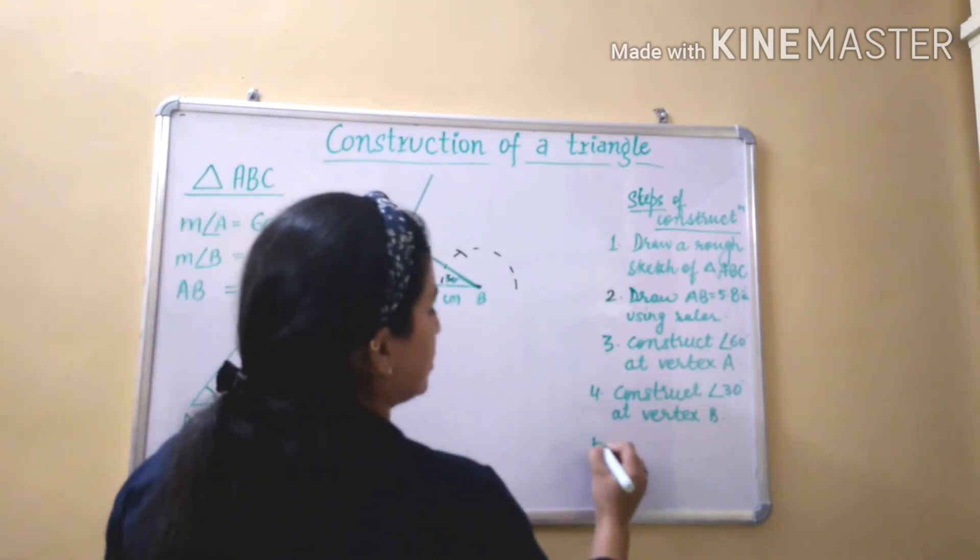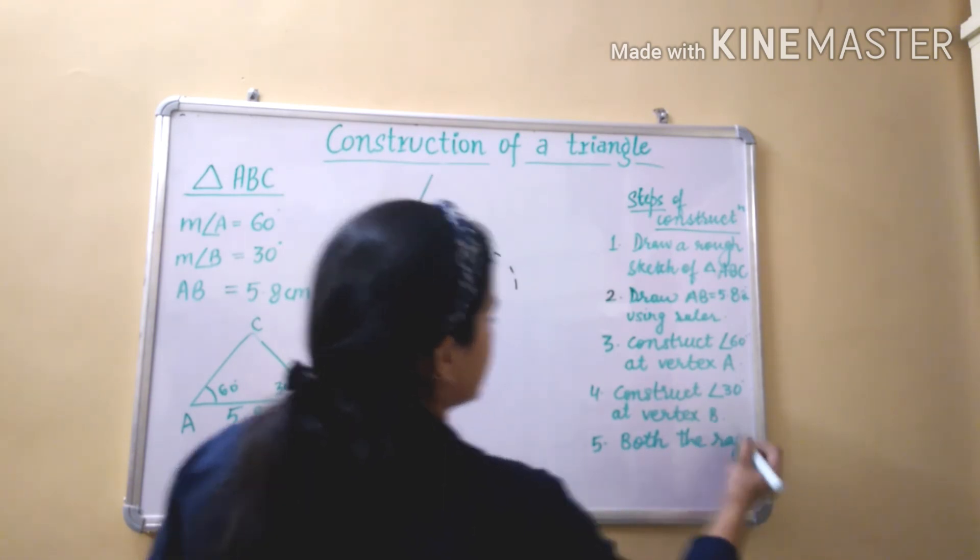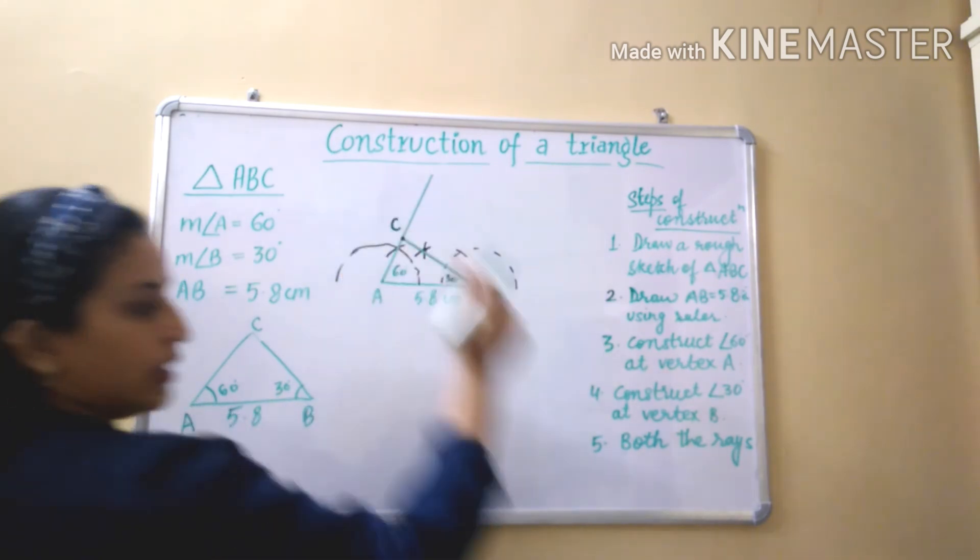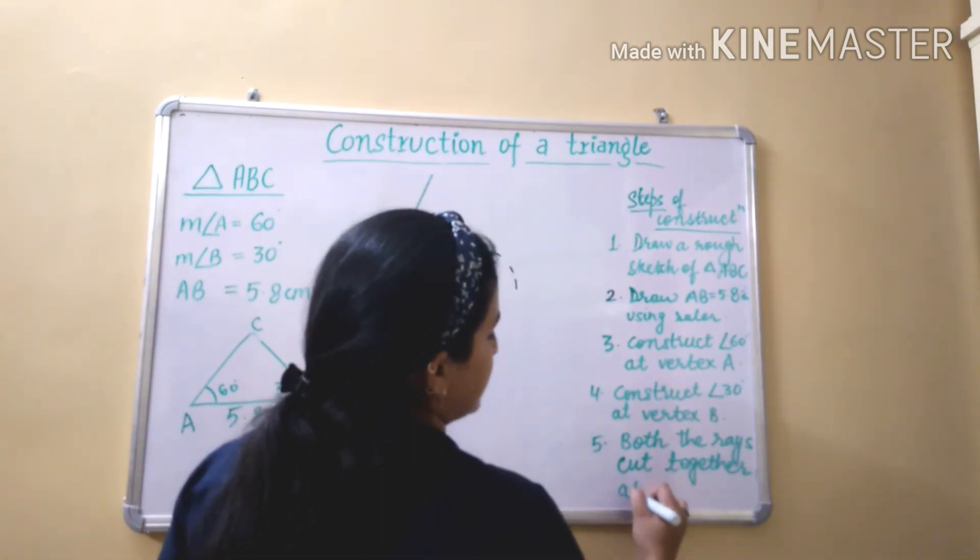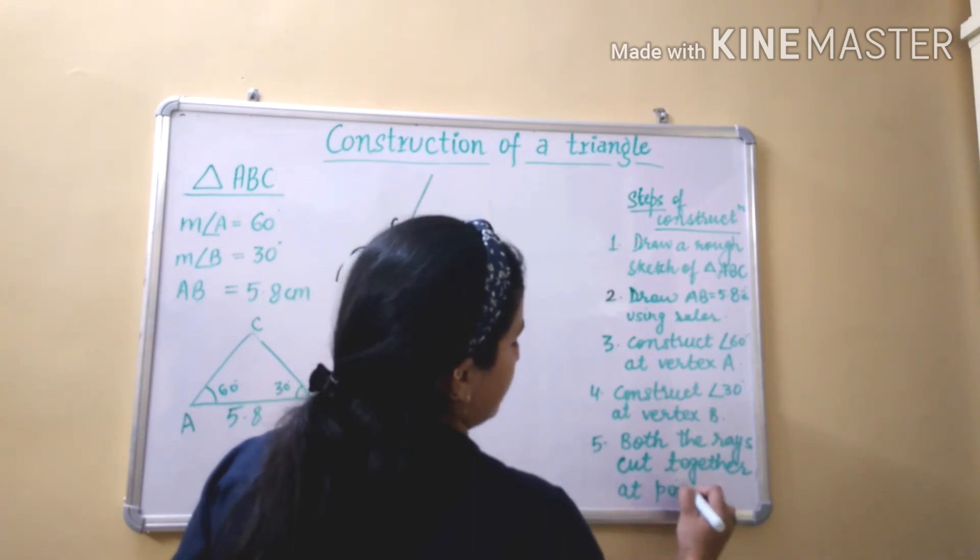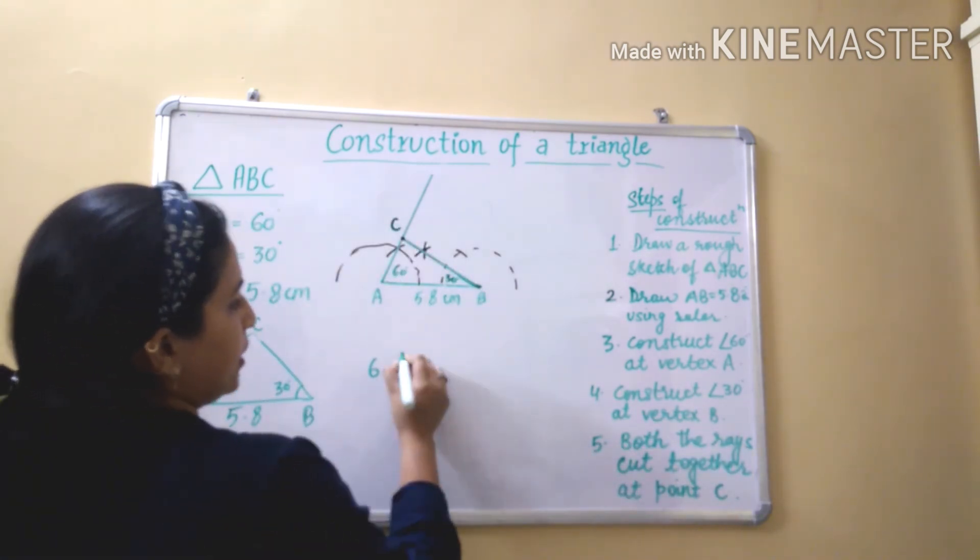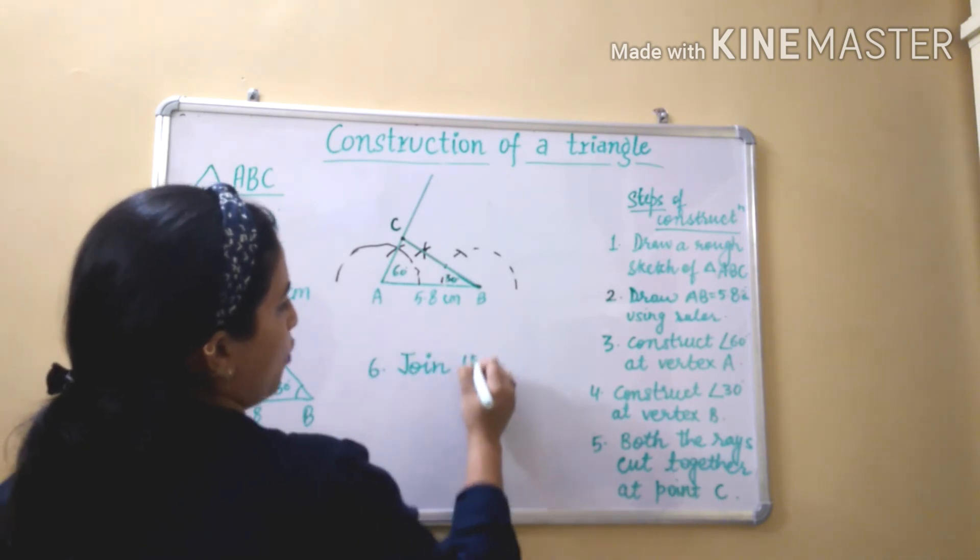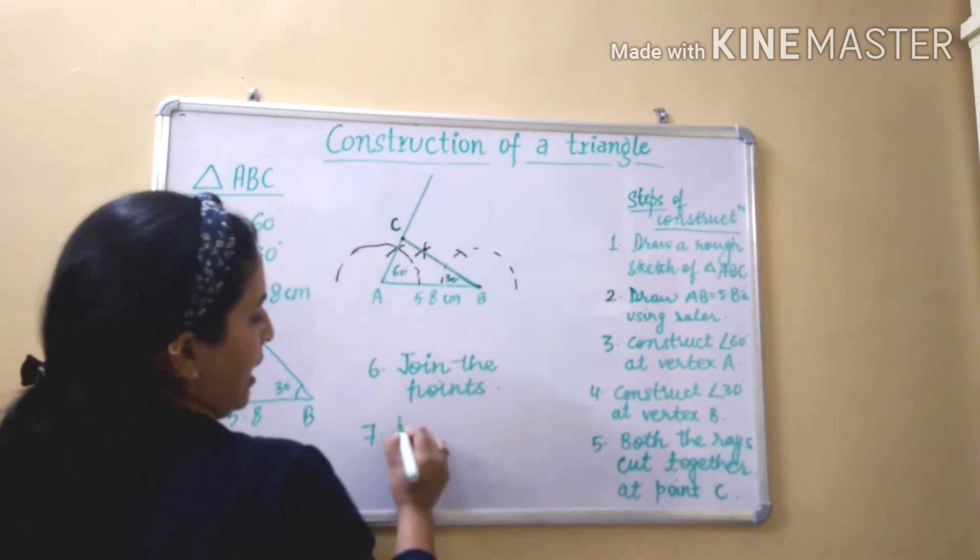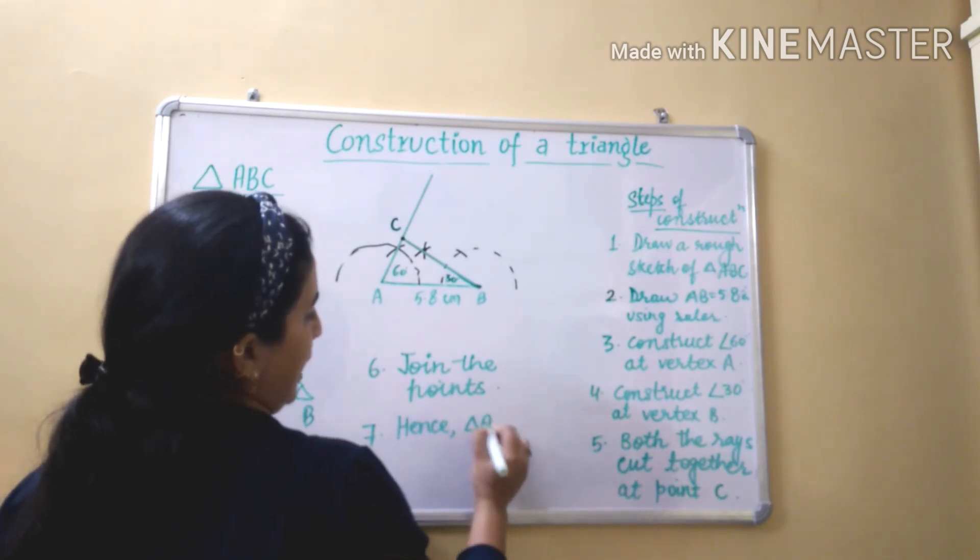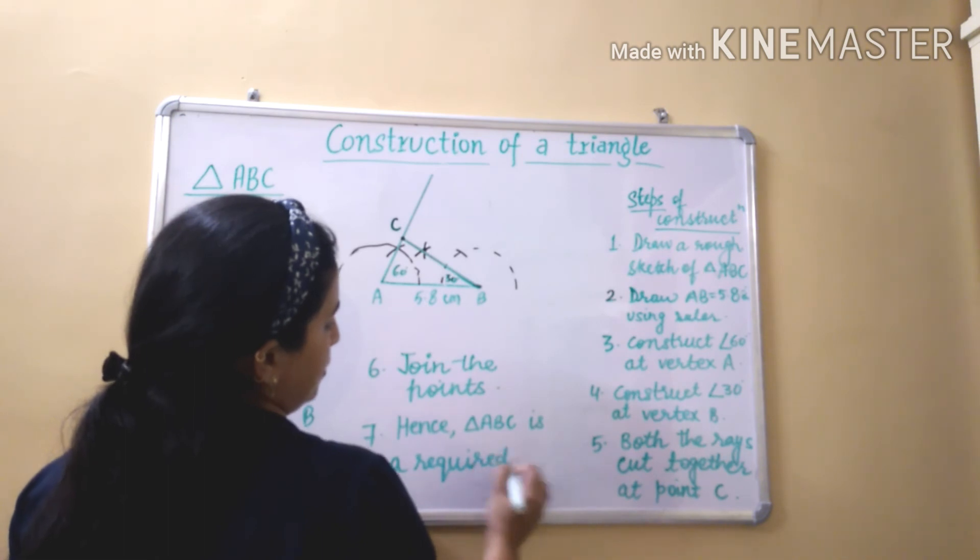Both the rays, you can see ray this and ray this, both the rays cut together at point C. Then sixth is join the points. Finally, hence triangle ABC is a required triangle.